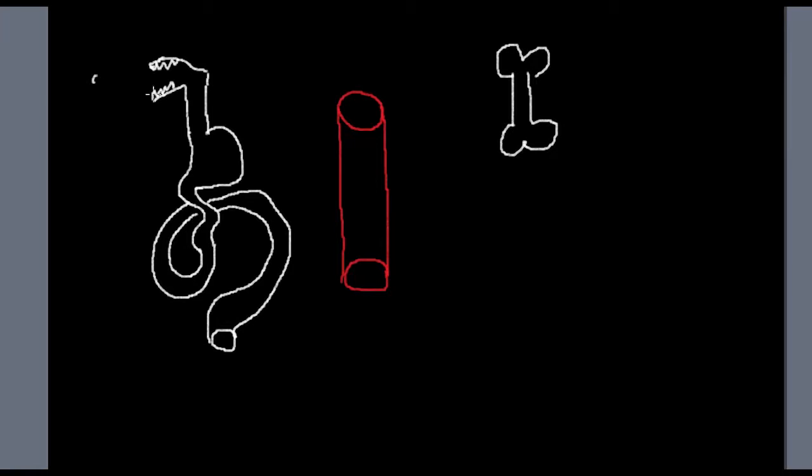This is the picture of our digestive tract. By the way, this is your teeth. This is the stomach, small intestine, large intestine. And we go to the bathroom right here. This is our bloodstream. And this is the bone. It's made out of connective tissues and calcium that sits right here.